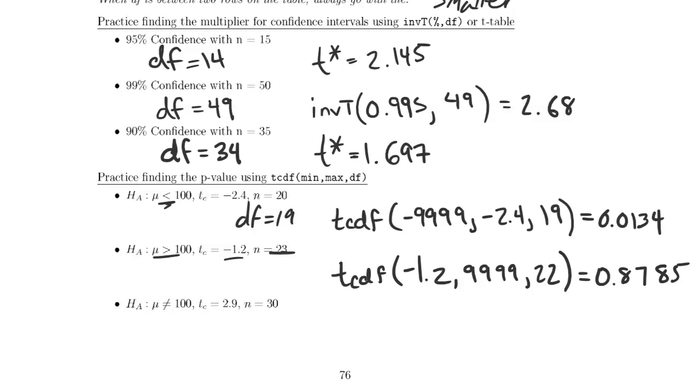Then in the third example, we have mu not equal to 100 and a test statistic of 2.9. Since this is a two-tailed hypothesis test, I'm going to double the tcdf from 2.9 to 9999. I could also do negative 9999 to negative 2.9 with a df of 29, and that is equal to 0.007.